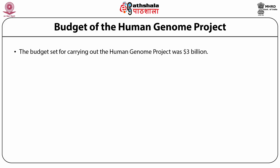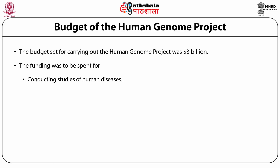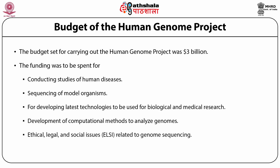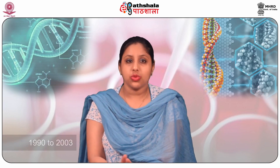The budget set for carrying out the Human Genome Project was $3 billion. The funding was to be spent for conducting studies of human diseases, sequencing of model organisms, developing latest technologies for biological and medical research, development of computational methods to analyze genomes, and addressing ethical, legal and social issues related to genome sequencing. This amount was to be spent in three stages over a 15-year period, initially from 1990 to 2005, but due to accelerated progress, calculated from 1990 to 2003.